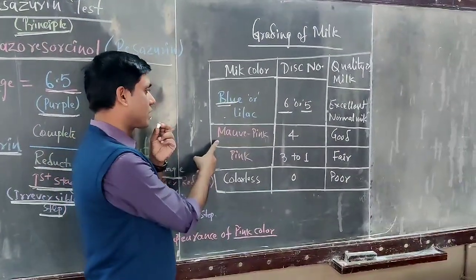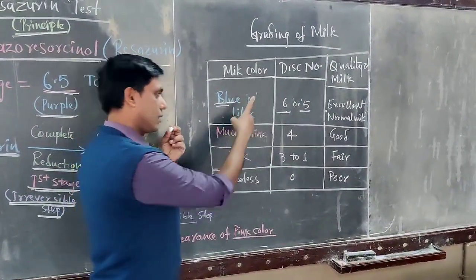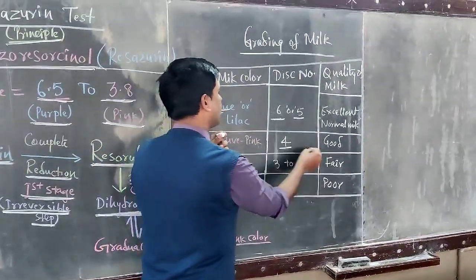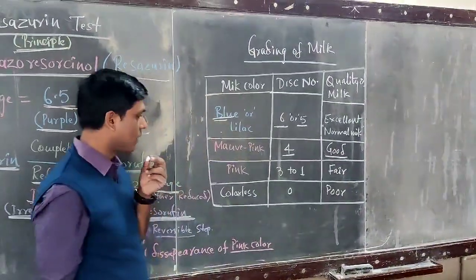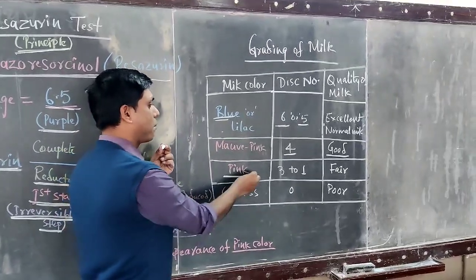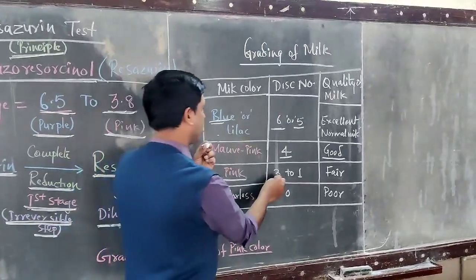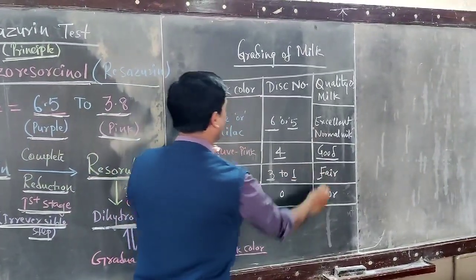If the milk color after one hour is mauve pink matching disc number 4, this indicates good quality milk. If the color is pink matching disc numbers 3 to 1, this indicates fair quality milk.